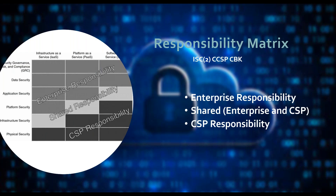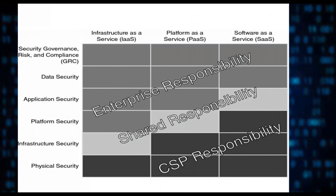Knowing your deployment model and service model, you can start to think about what your responsibility is. This is an absolute favorite responsibility matrix. It comes from the CBK from ISC Squared's cloud security professional certification and it really lays it out quite simply: what is the enterprise responsibility, what's the cloud provider's responsibility, and where is that shared? You can see GRC, data, app, platform, infrastructure, physical — and the shading shows where the cloud service provider is responsible, where there's shared responsibility, and where it's the enterprise's responsibility.